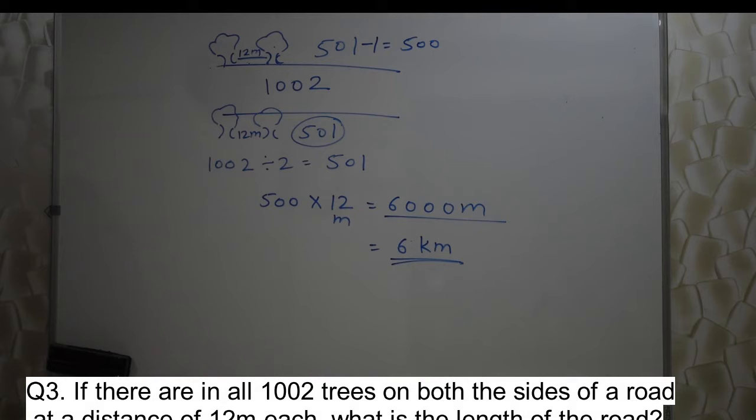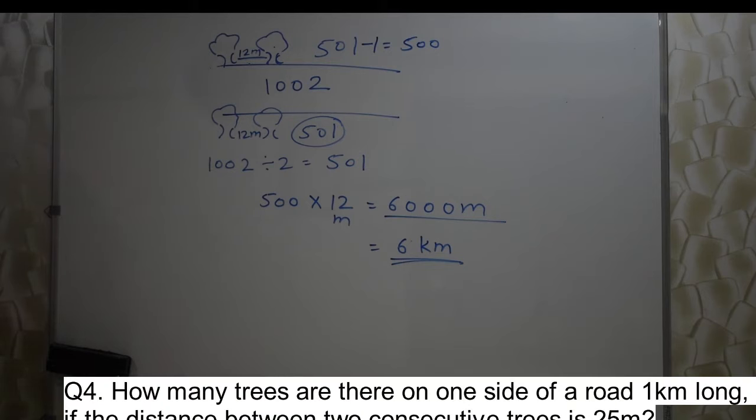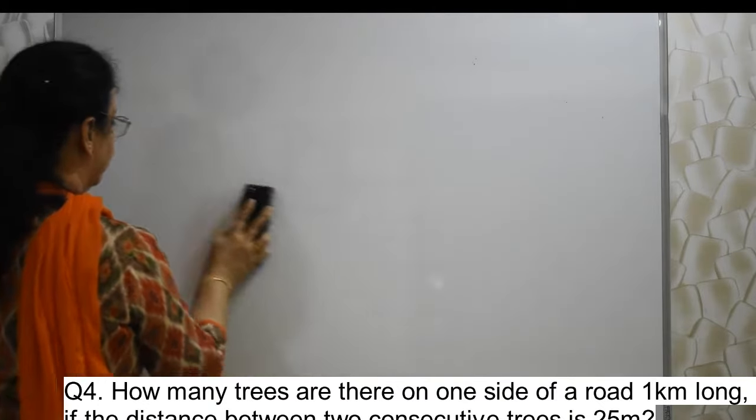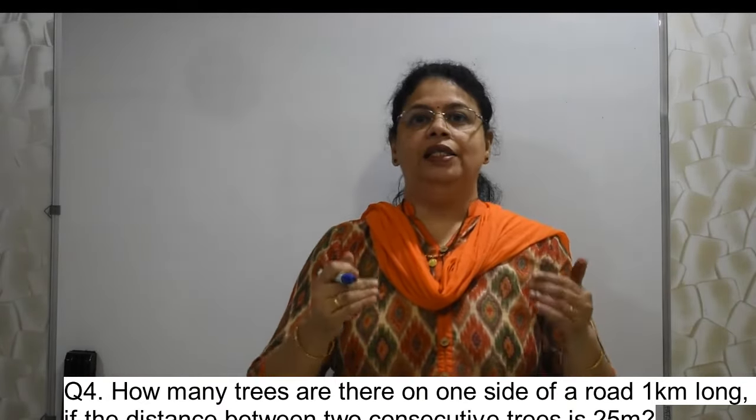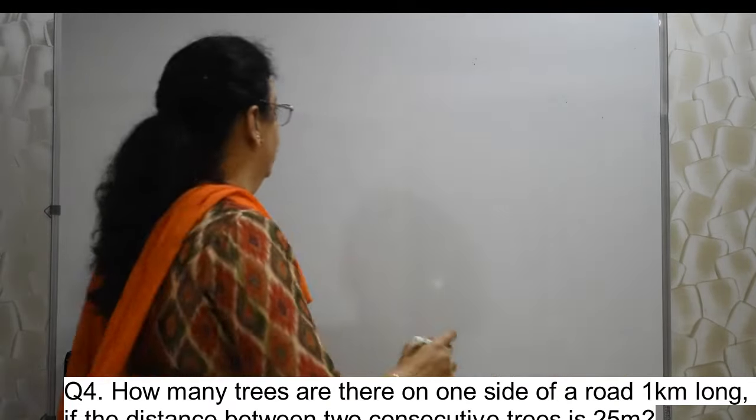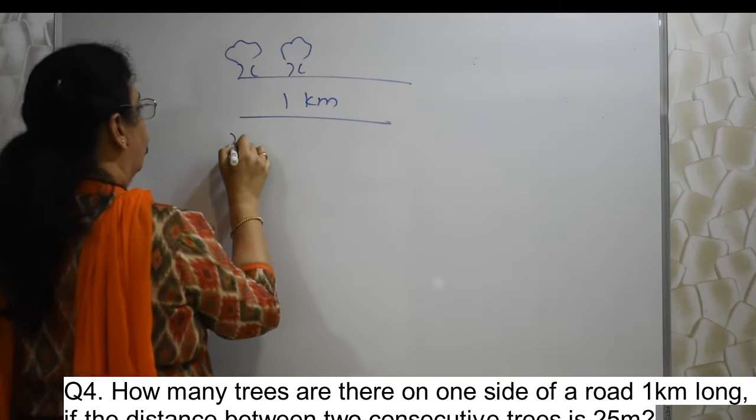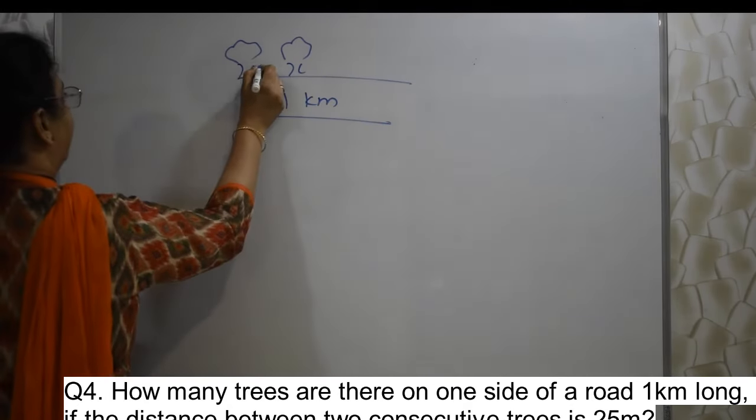Let's go ahead and solve the similar type of sum. How many trees are there on one side of a road, one kilometer long, if the distance between two consecutive trees is 25 meter? Here they have given the length of the road. And they are telling us to find out how many trees can be planted on one side of the road. In earlier sum, they had given us total trees and they asked us the length of the road. Here length of the road is given, and they are asking us to find out how many trees can be planted on one side of the road. See student, one kilometer road is there. Again trees are planted. Here only one side.